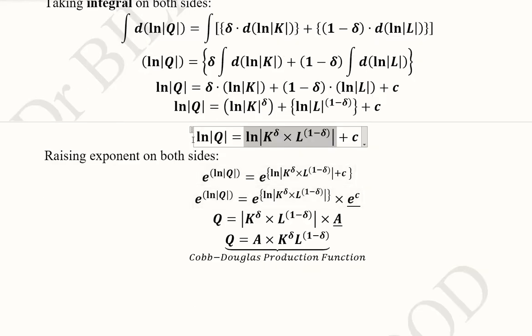After this, we are going to raise it to the exponent. And the purpose of taking the exponent is to get rid of natural log because we are getting close to the standard form of the Cobb-Douglas production function. Raising it to exponent will cancel out the natural log and the exponent.